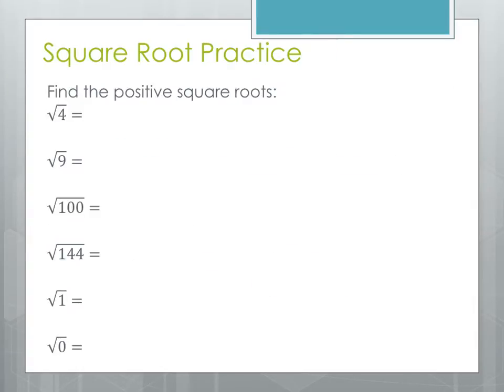Let's practice finding some square roots. Here we're just going to find the positive square root only. The square root of 4, we need to find the number that when we square it we're going to get 4 back. And that number is going to be 2 because 2 squared or 2 times 2 equals 4.